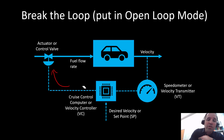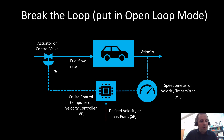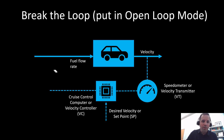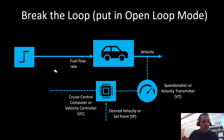To tune a controller, we are trying to obtain values for our proportional and integral controller gains. The first step is to break the loop by disconnecting the controller from the fuel flow rate variable. This is equivalent to driving down the highway and suddenly making a step change in pedal position.